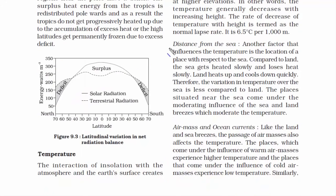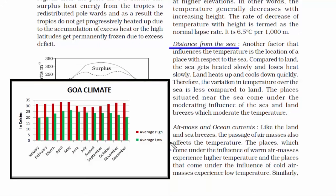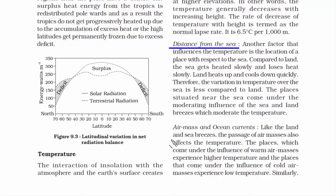The third factor is distance from the sea. The sea gets heated slowly and loses heat slowly, while land heats up and cools down quickly. Therefore, the variation in temperature over the sea is less compared to land — that's why coastal regions barely face any temperature variation and remain almost the same temperature throughout the day.